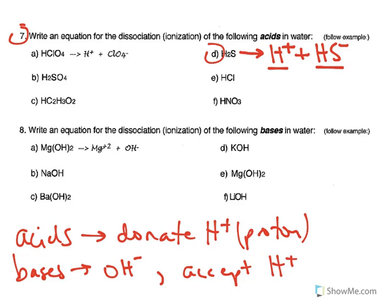Let's look at another one. If we have nitric acid, that dissociates to produce hydrogen ion plus the NO3 minus anion. Let's look at number eight and discuss what bases will do in water.